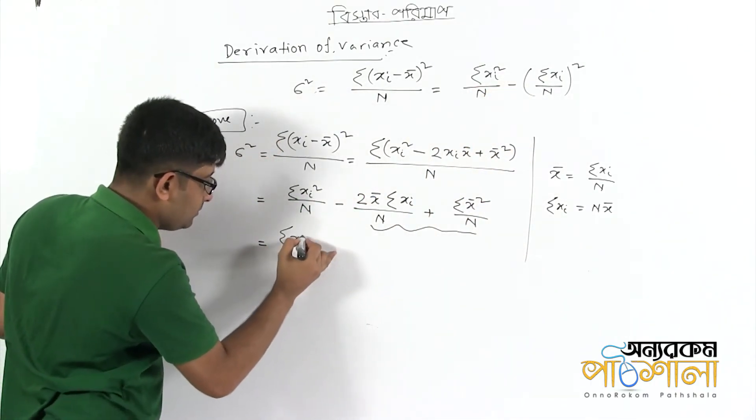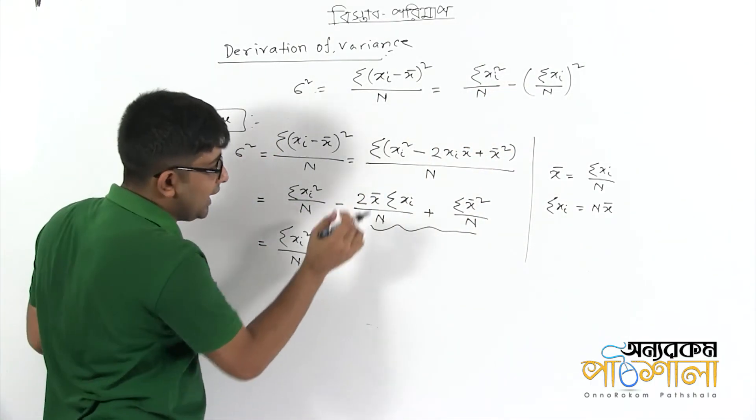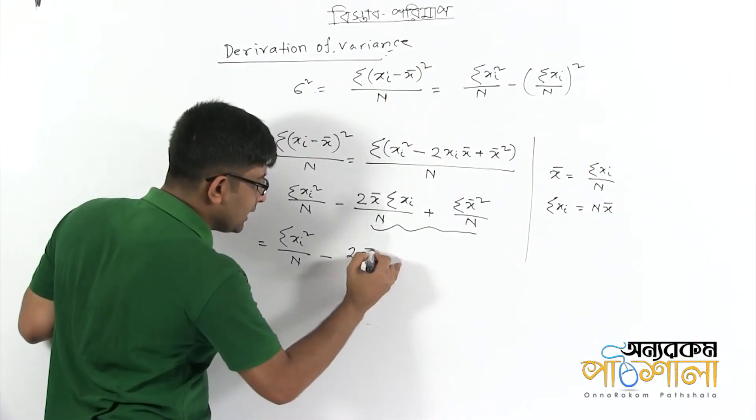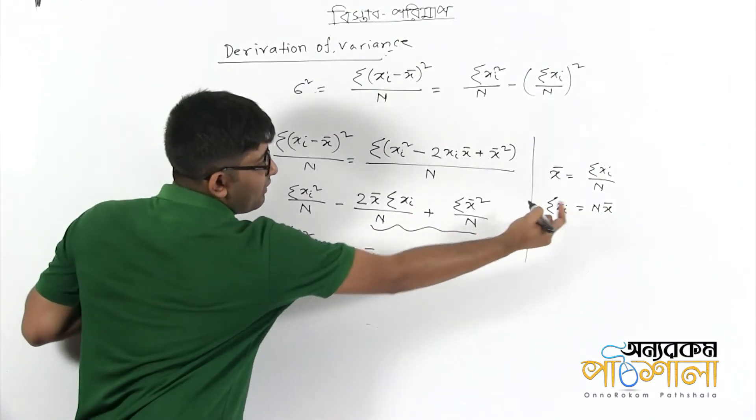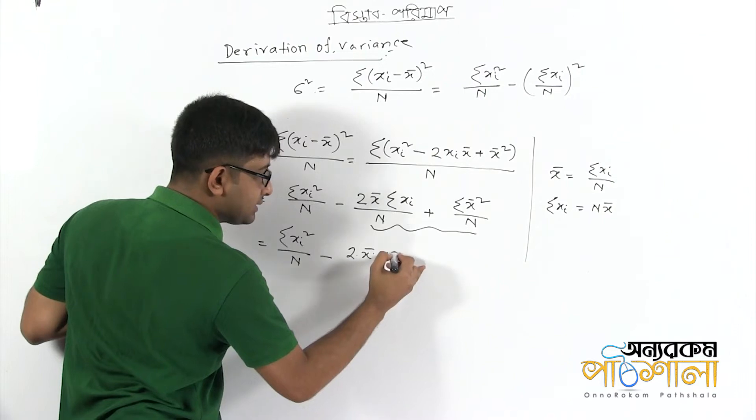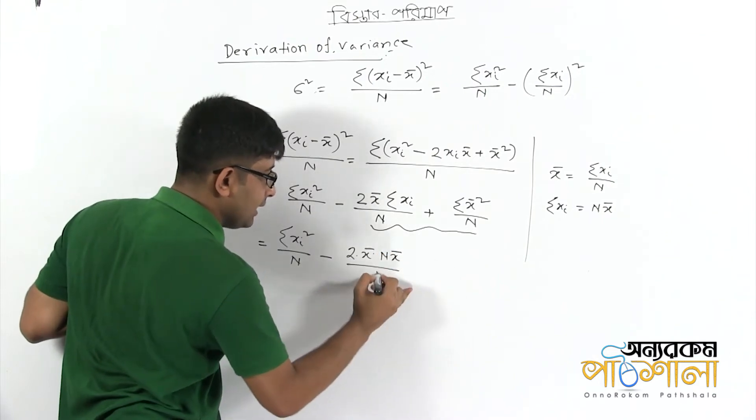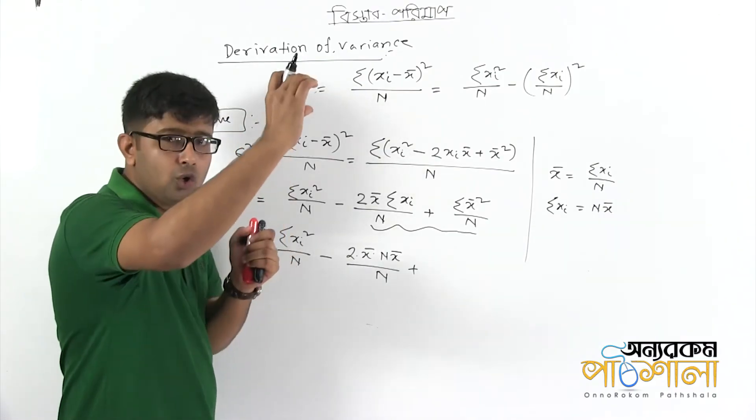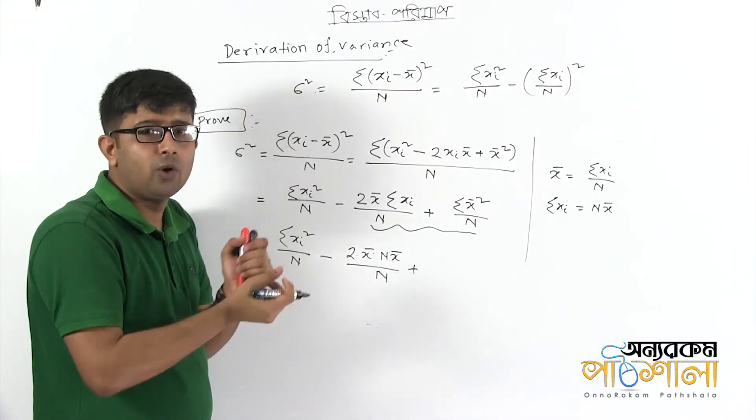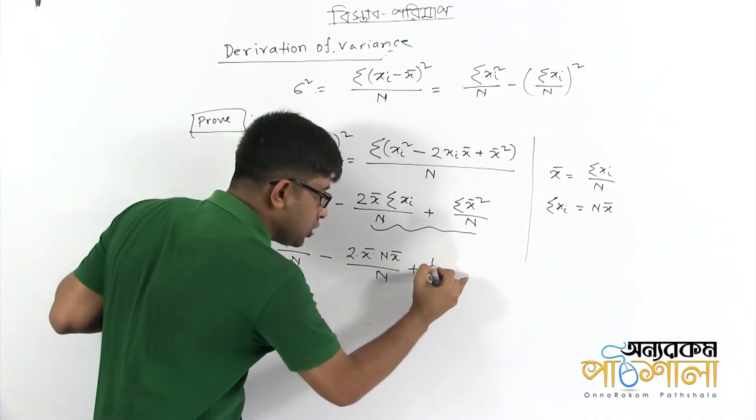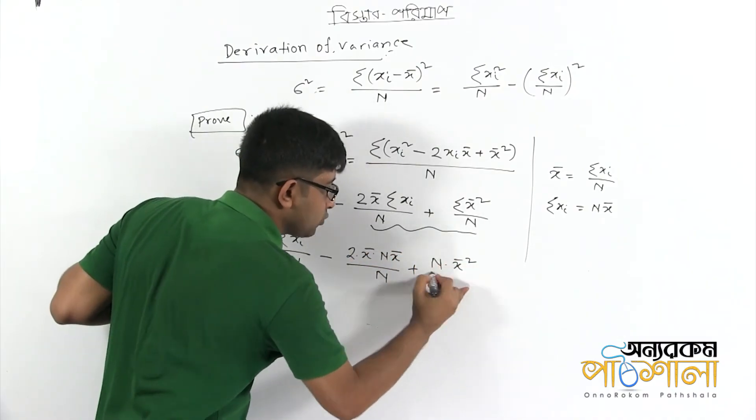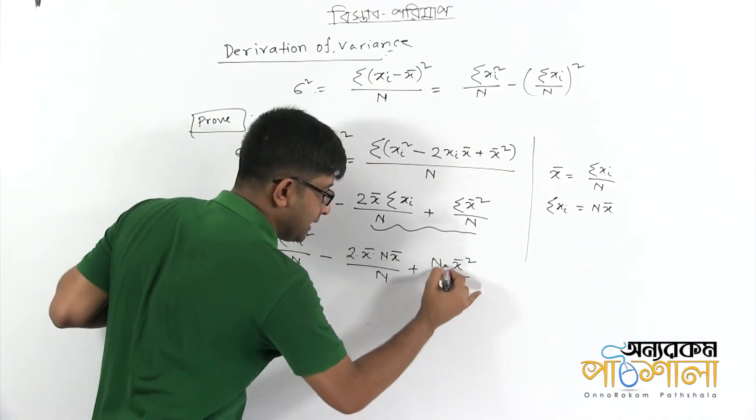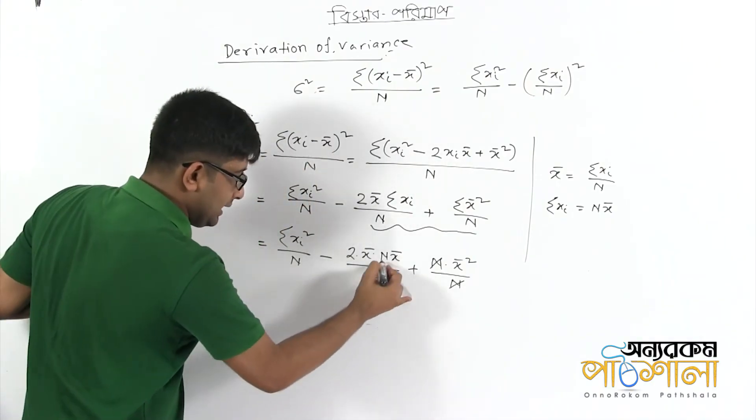We get minus 2x bar times summation of xi divided by n plus summation of x bar square. Ultimately, x bar square times n over n. So we can cancel the n and n.